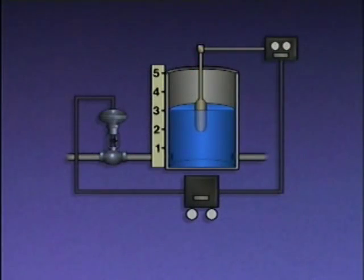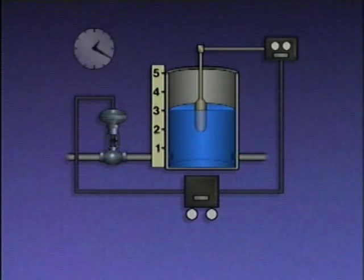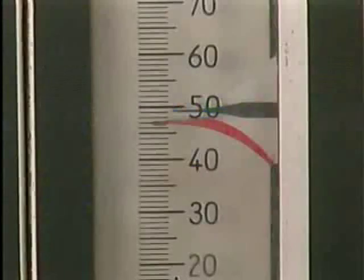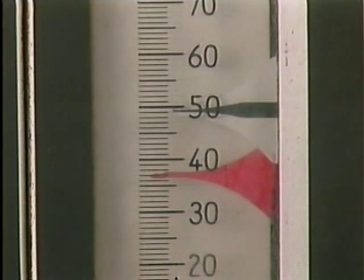When a process is operating normally, the variables for that process will be at or near their desired values. The desired value of a process variable is known as the set point. For example, the set point for the water level in this system is three feet. When the values of the process variables in a system remain relatively constant over a period of time, the system is said to be operating under steady-state conditions. Most control systems will allow slight variations in the values of process variables, but if the value of a variable changes significantly from its set point, corrective action may be needed to return the process to its original operating conditions.